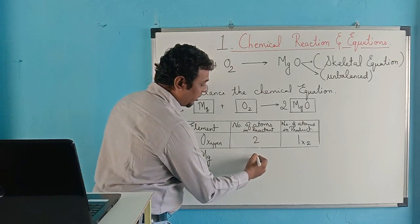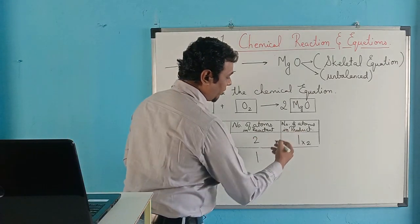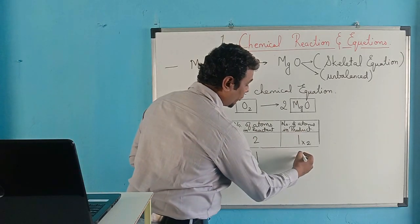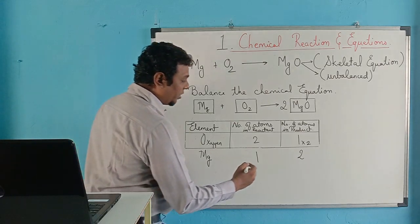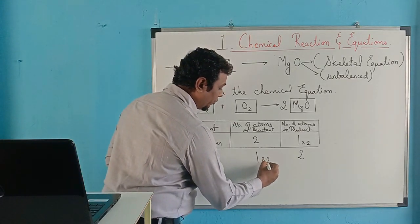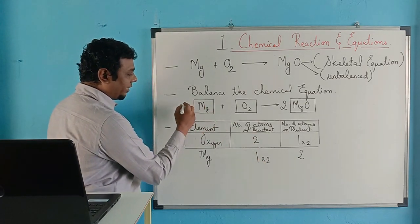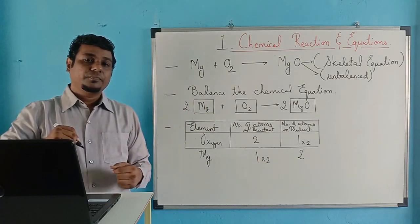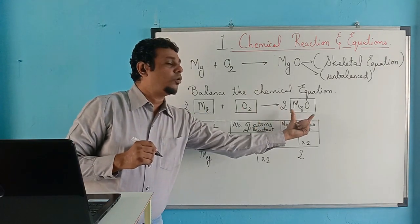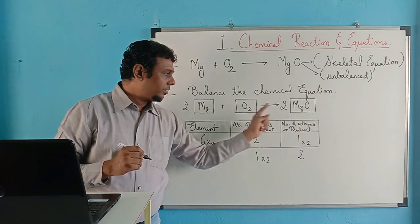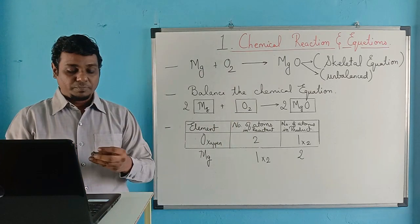In the initial reactant, magnesium was one. After multiplying, the product now has two atoms. So to balance magnesium, we multiply by two in the reactant as well. This gives us two magnesium, two oxygen, and two molecules of magnesium oxide. That is a balanced chemical equation, which conserves the mass property.